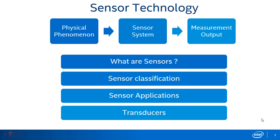Sensors are present everywhere. They are embedded in our bodies, automobiles, airplanes, cellular telephones, radios, industrial plants, and countless other applications. Without the use of sensors, there would be no automation.